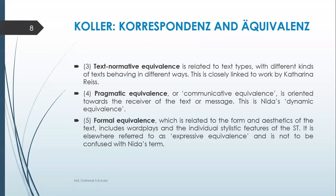Text-normative equivalence depends on the types of text, with different kinds of texts behaving in different ways. Now, pragmatic equivalence — also called communicative equivalence — is oriented towards the receiver of the text or message. This is like dynamic equivalence. Pragmatic equivalence depends on the reader: what will be their experience after receiving the translation? It considers how the source text is going to be communicated and understood by the readers.